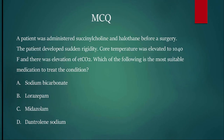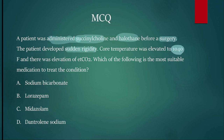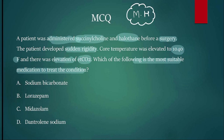Next question: a patient was administered succinylcholine — a muscle relaxant — and halothane before surgery. The patient developed sudden rigidity, core temperature elevated to 104°F, and elevation of end-tidal CO2. What is the most suitable medication to treat this condition? First, what condition are we dealing with? This is called malignant hyperthermia. In malignant hyperthermia, in some sensitive people, administering succinylcholine or halothane or fluorinated anesthetics like desflurane, isoflurane, or sevoflurane can cause this.